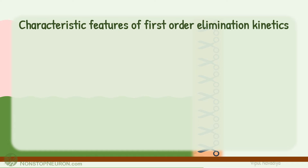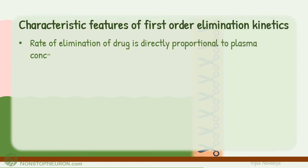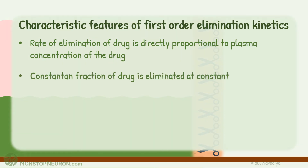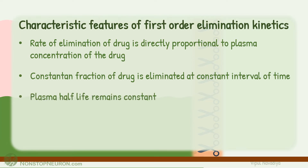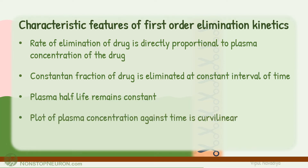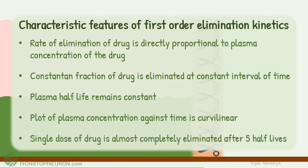These features are as follows. In first order kinetics: rate of elimination of drug is directly proportional to plasma concentration of the drug; constant fraction of drug is eliminated at constant interval of time; plasma half-life remains constant; the plot of plasma concentration against time is curvilinear; and a single dose of drug is almost completely eliminated after 5 half-lives. Now let's see them in detail one by one.